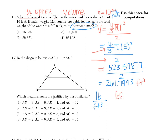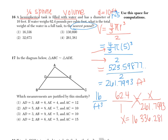We have 62.4 pounds for every 1 cubic foot, which is equal to x pounds over our 261.7993 cubic feet. When we cross-multiply, we get x equals 62.4 times 261.7993. Multiplying those gives us 16,336.281. Rounding to the nearest pound means no decimals — look to the right of the ones place, it's a 2, so keep it. That gives us choice 1.